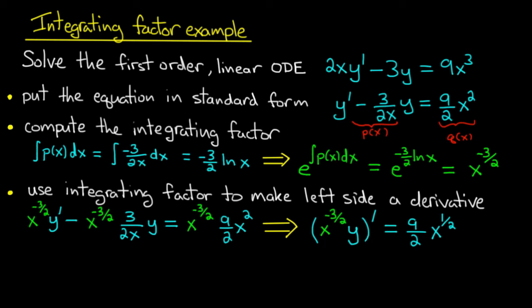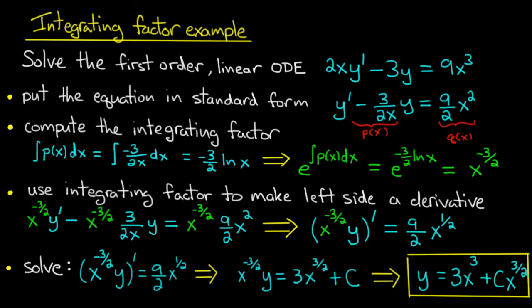So what have we got? We have (x^(-3/2) y)' = (9/2)x^(1/2). We're in the home stretch here. This is actually pretty easy to solve. So what do we do?